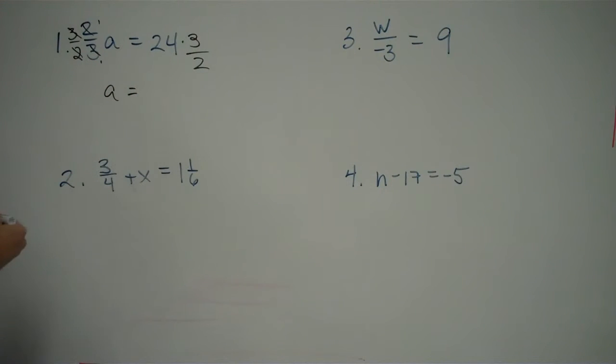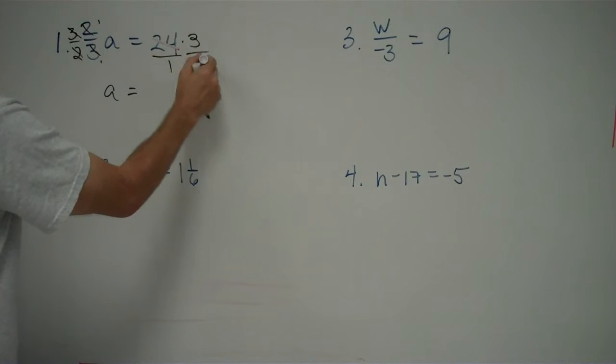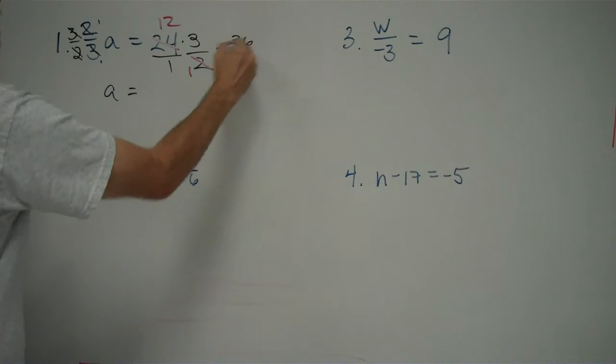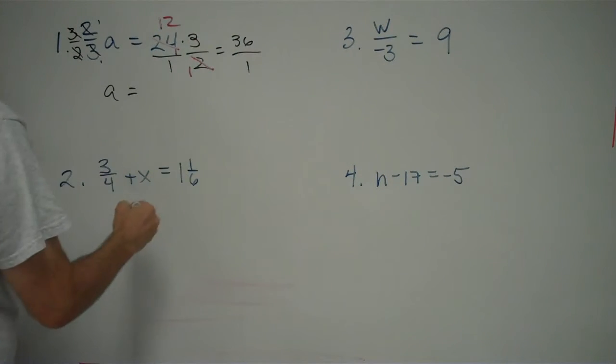And over here, I have whole number times fraction. Well, let's see. I know how to do this. I'll put the whole number over one. And now, life really gets easier if you simplify before you multiply cross. You can multiply cross first if you'd like to, but then you're dealing with bigger numbers, and frankly, I prefer to work with smaller numbers. So, let me look at my 24 over 2, and that's the same thing as 12 over 1. So, now I have 12 times 3, which is 36, over 1 times 1, which is 1. So, that means my answer is a equals 36.